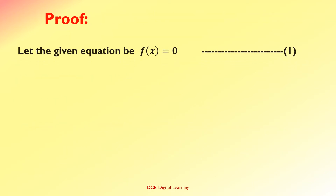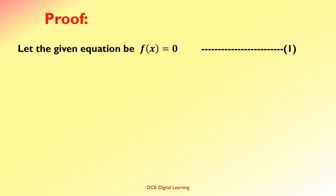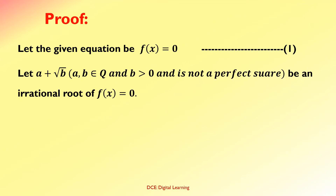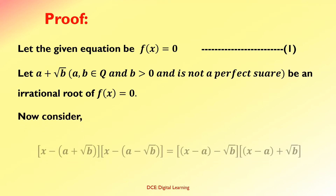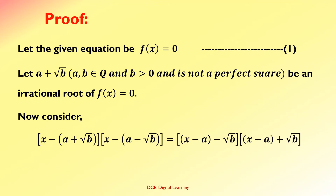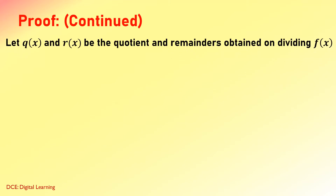Let us look at the proof of this theorem. Let the given equation be f(x)=0, equation 1. Let A+√B, where A, B are rational numbers and B is positive and not a perfect square, be an irrational root of f(x)=0. Now consider the product (x−(A+√B))(x−(A−√B)), which equals (x−A)²−B, equation 2. The polynomial in equation 2 is a polynomial with rational coefficients. Let Q(x) and R(x) be the quotient and remainder obtained on dividing f(x) by the polynomial in equation 2.